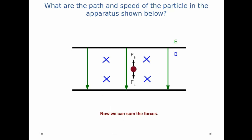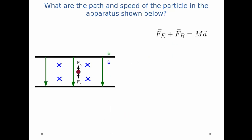Now we can sum these forces. So the electric force plus the magnetic force must equal m times a. I can sub in q times E for the electric force, q v cross B for the magnetic force, that equals ma, and I can factor out the q.